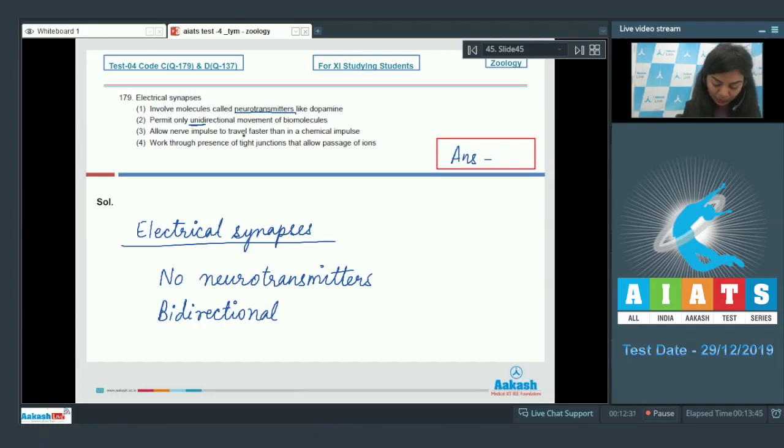Option 3: allow nerve impulse to travel faster than in a chemical impulse. This is true. Electrical synapses are faster than chemical synapses in terms of sending impulses. And lastly option 4, work through presence of tight junctions that allow passage of ions. Tight junctions do not allow passage of ions. Instead, gap junctions are present in electrical synapses which allow passage of these ions and biomolecules. So the correct answer here is option number 3.